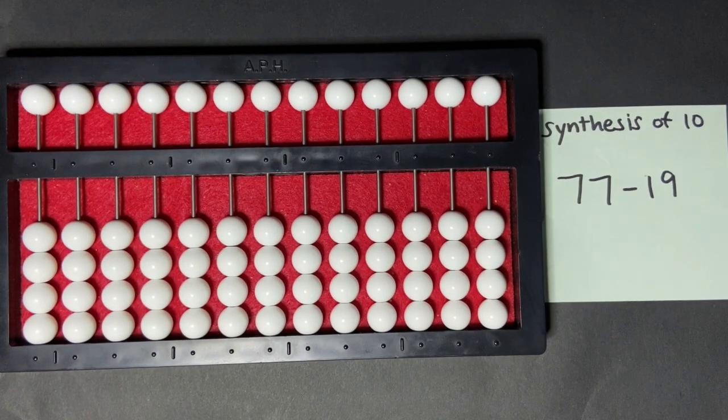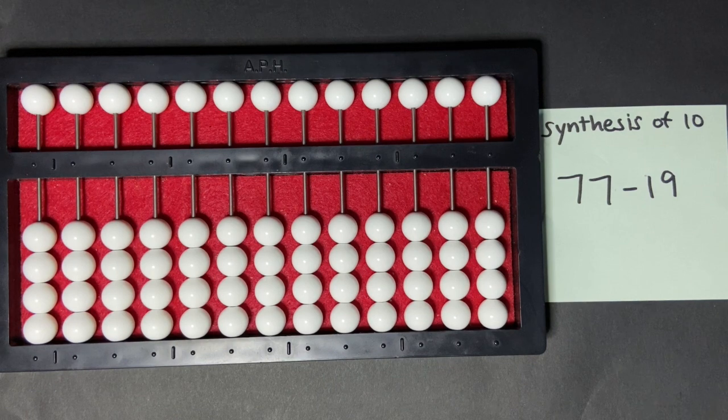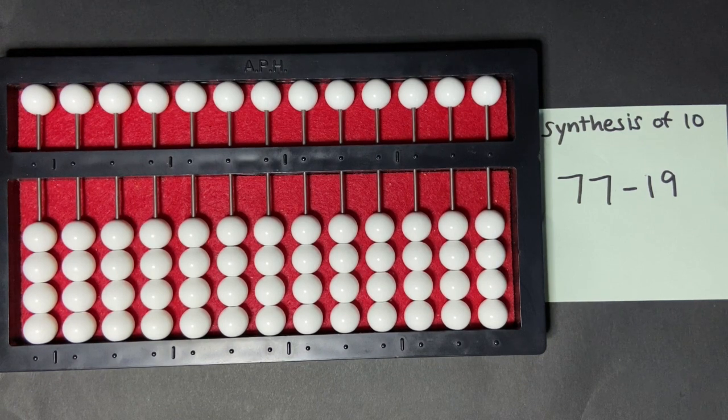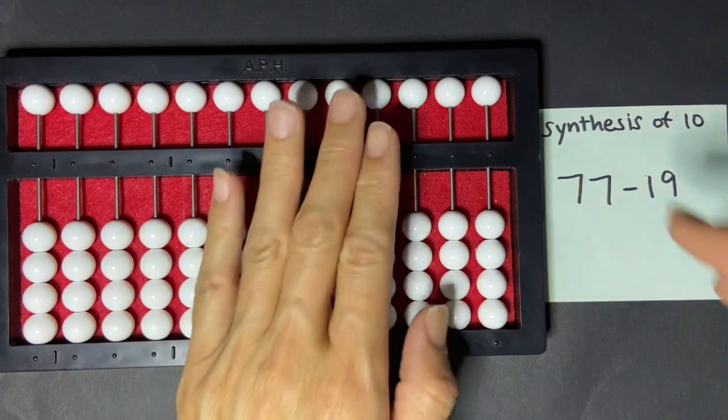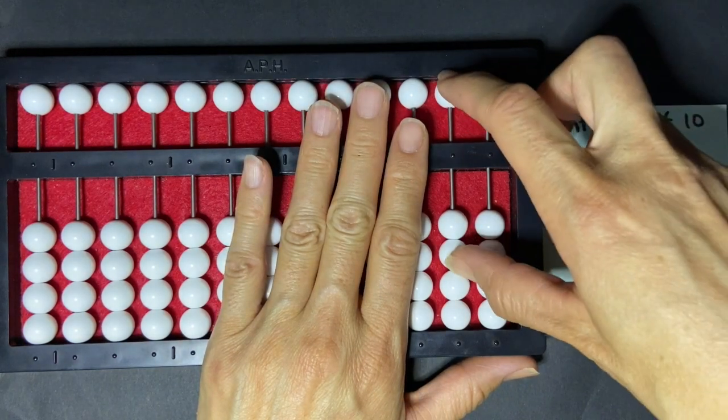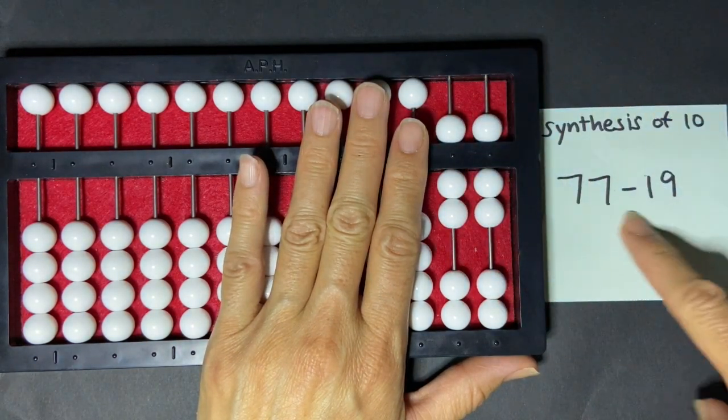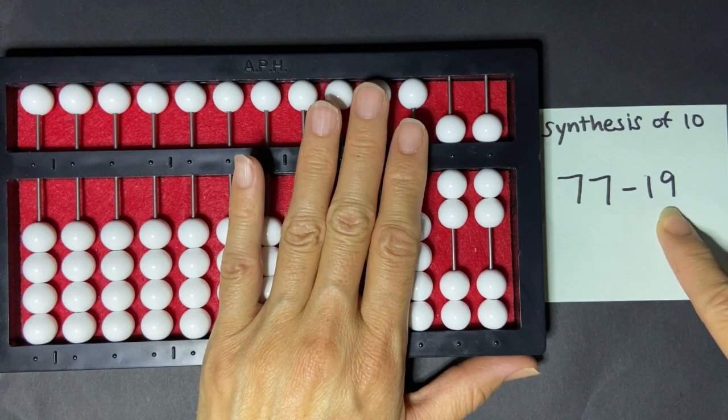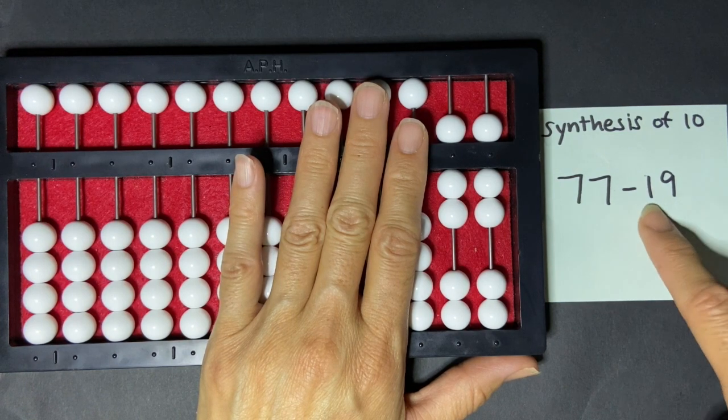We're going to be doing subtraction with an indirect method and I'm going to demonstrate the synthesis of 10. So we're going to set our minuend here, 77, and subtract the subtrahend which is 19.